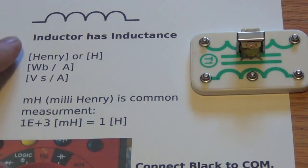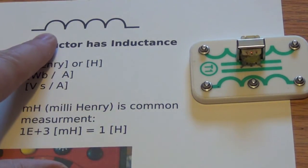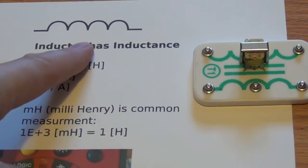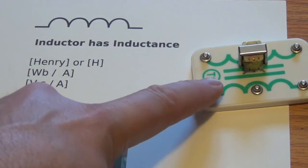An inductor has the property called inductance. This is a symbol for an inductor. It is simply just a coil of wire. Sometimes you'll see whole loops right here instead of half loops. This is a transformer. It's two inductors sitting next to one another.